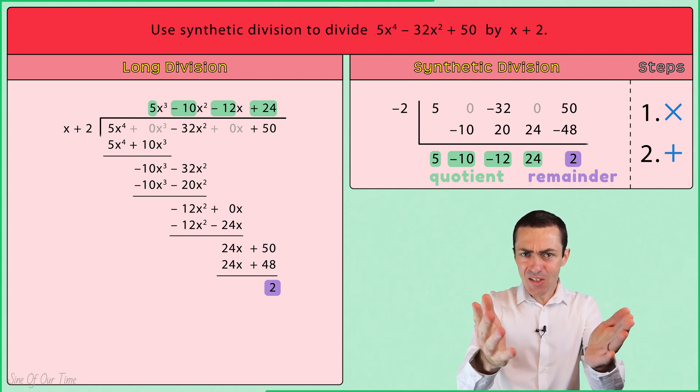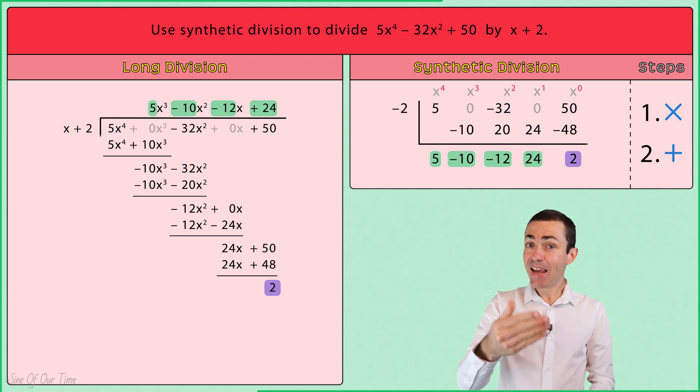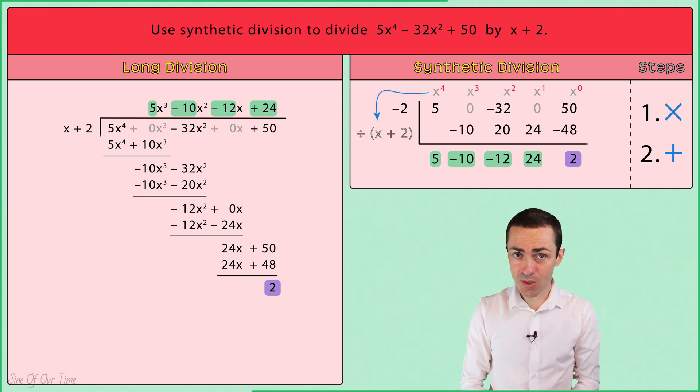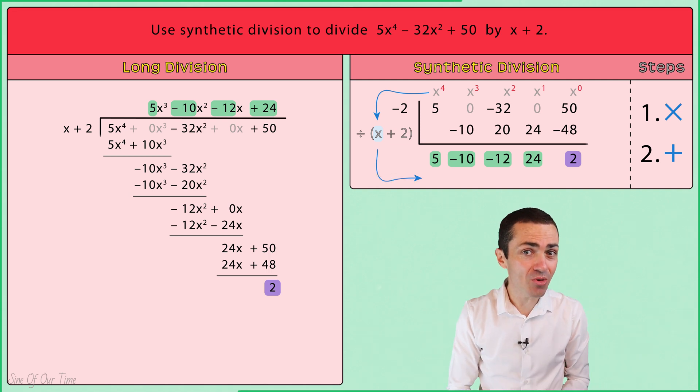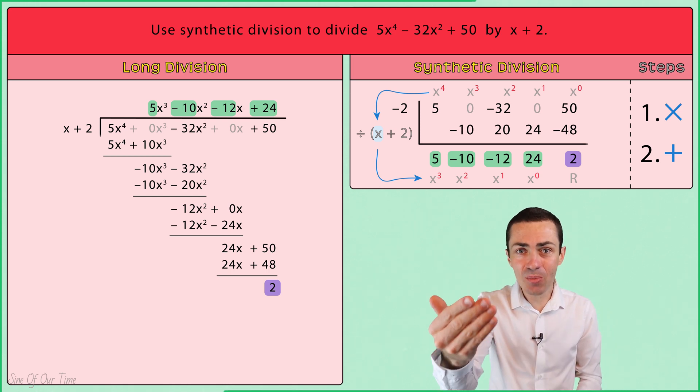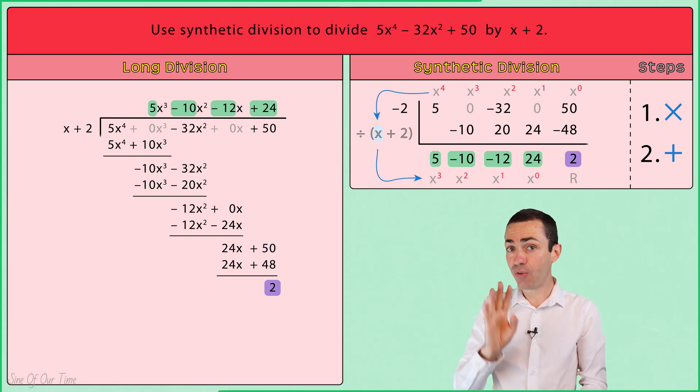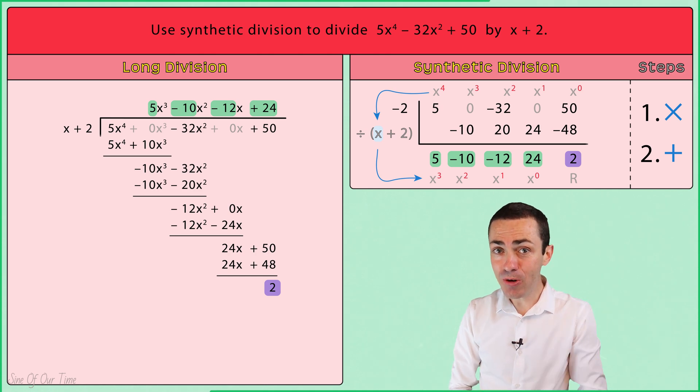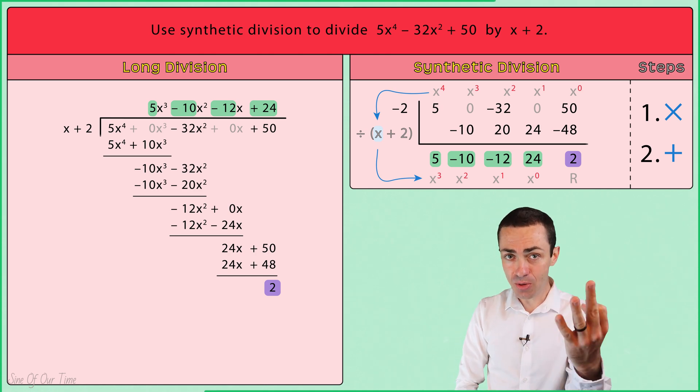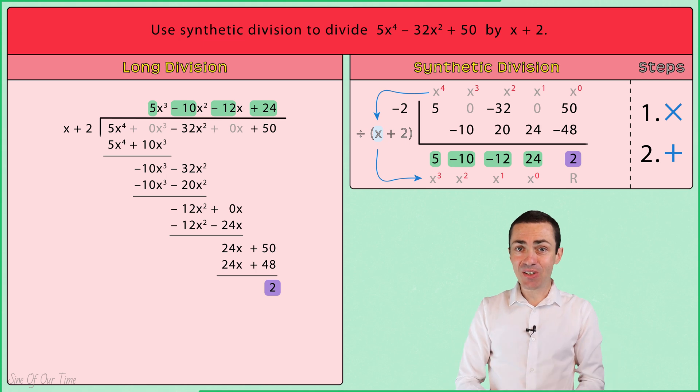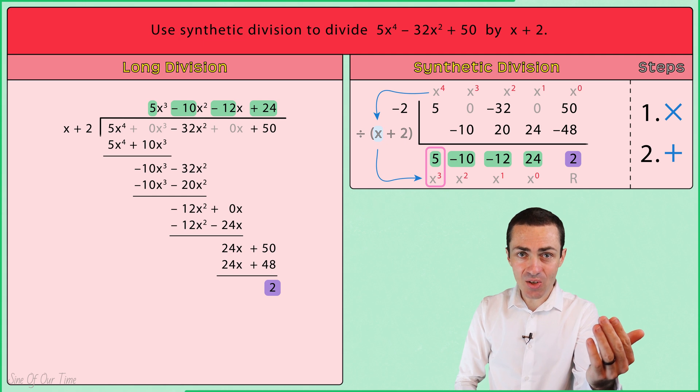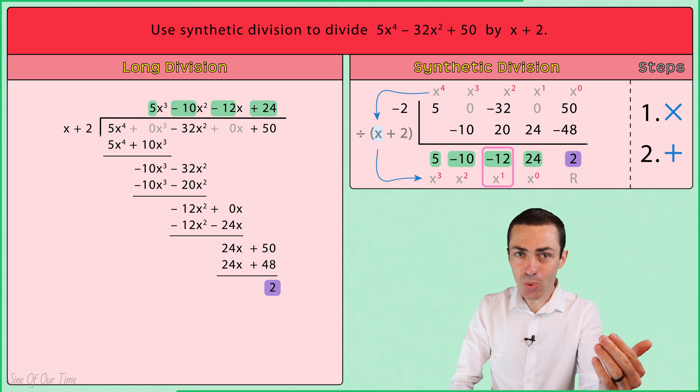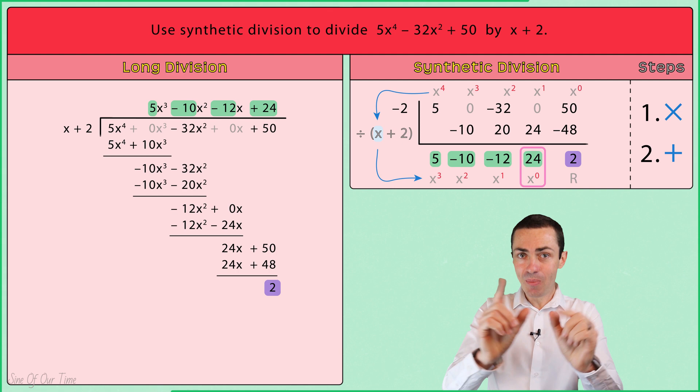Since each term of the dividend is always divided by X in the divisor of X plus 2, the corresponding term in the quotient always has a degree 1 less. The highest term in the dividend had a degree of 4, which means the highest term in the quotient will have a degree of 3. The quotient is 5x to the power of 3 minus 10x squared minus 12x plus 24 with the remainder of 2.